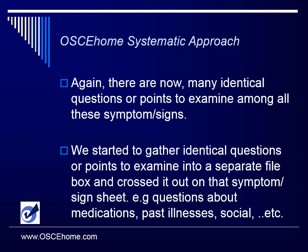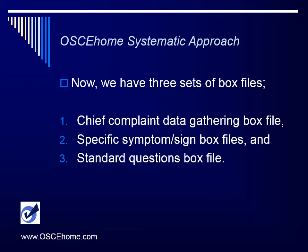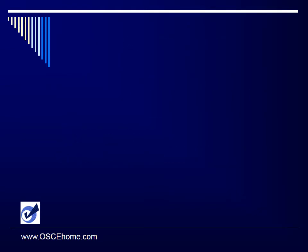Again, there are now many identical questions or points to examine among all these symptoms and signs. We started to gather identical questions or points to examine into a separate box file and crossed them out on the individual symptom/sign sheets — for example, questions about medications, past illnesses, social history, and so on. Now we have three sets of basic box files: a chief complaint data-gathering box file that we ask everyone, several specific symptom/sign box files where we choose one depending on the scenario, and a standard question box file that we ask everybody.